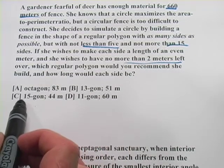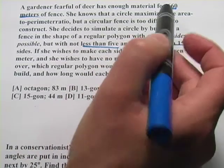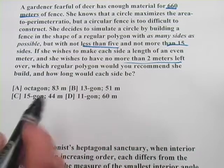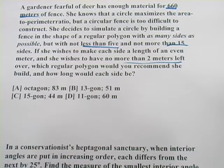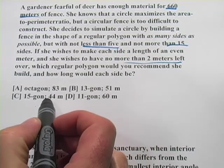They're giving us the number of sides and the meters per side. We have to check that it doesn't exceed 660, because then she wouldn't have enough to do that. So I would just take 15 times 44, and that's exactly 660.